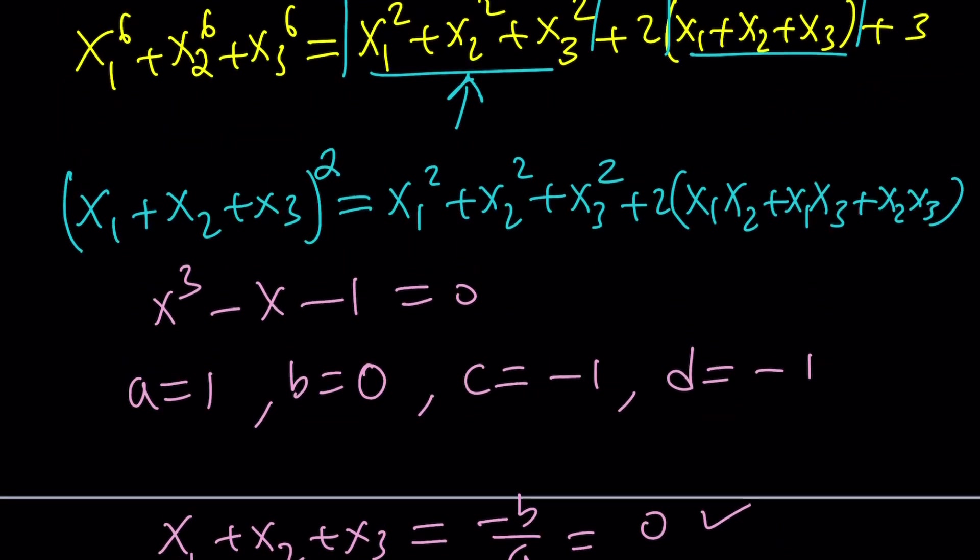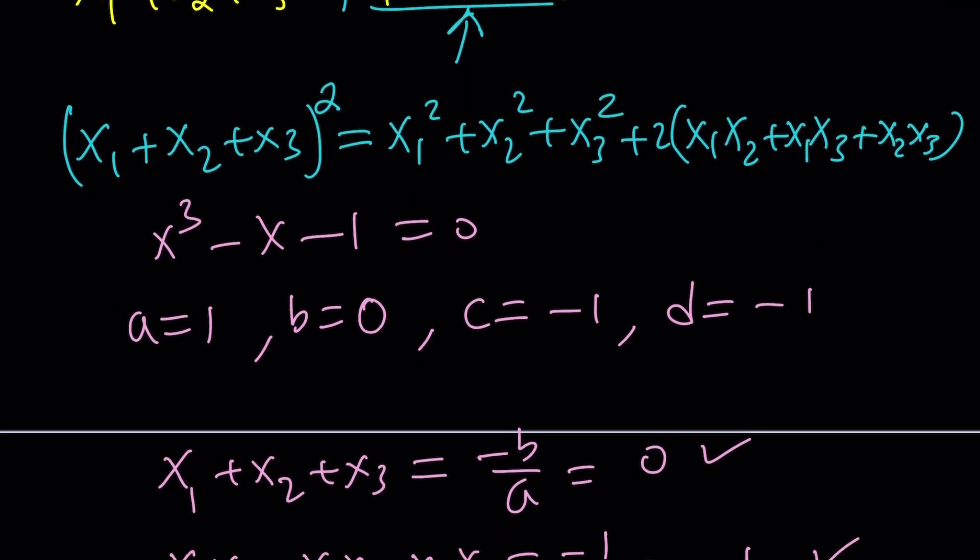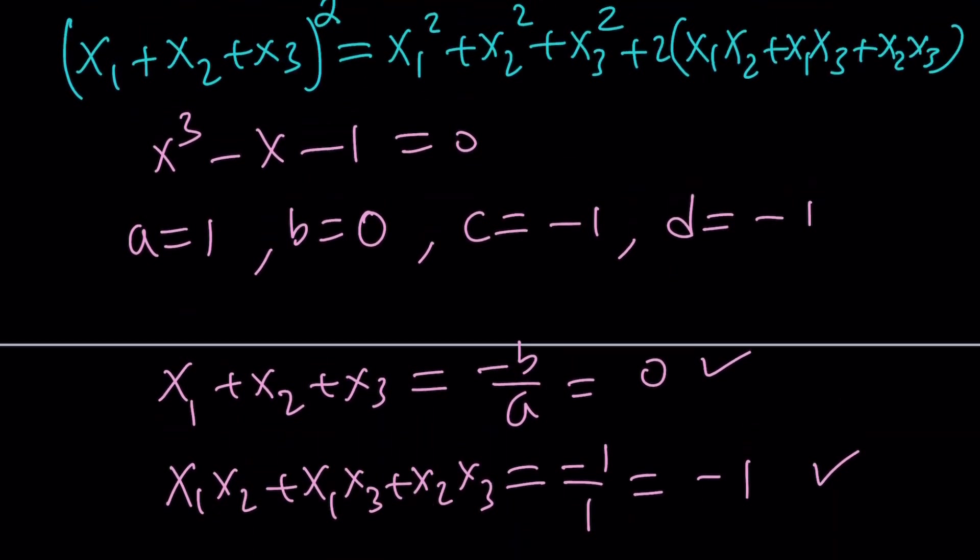So those are the two values we need. Let's plug them in. So the sum is 0, and this is going to be negative 1. So this is a negative 2. If you add it to both sides, you're going to get 2 for this. So this is going to be a positive 2. Makes sense? 2 minus 2 equals 0. Great.